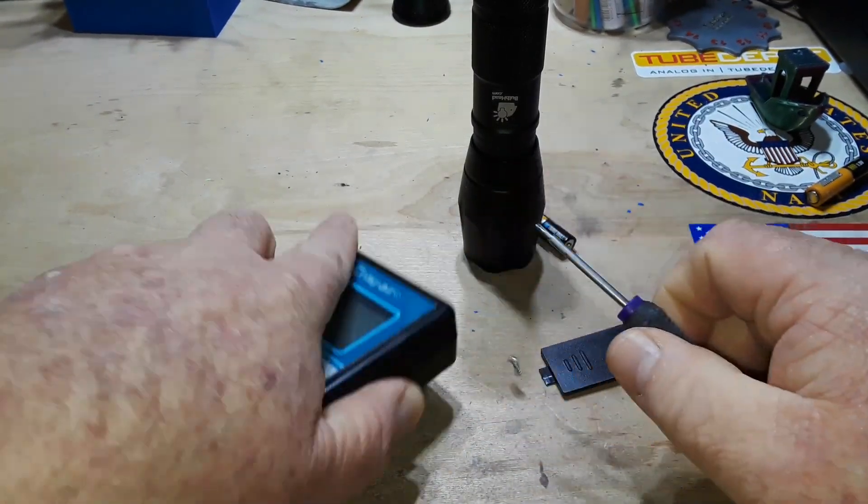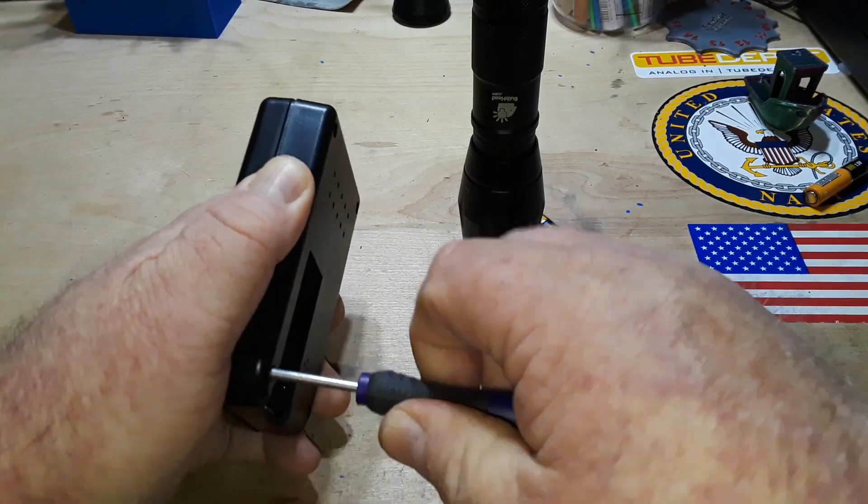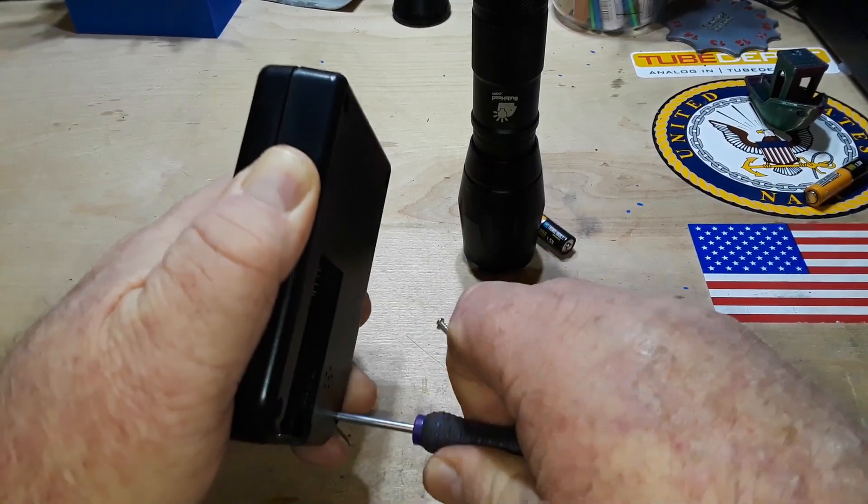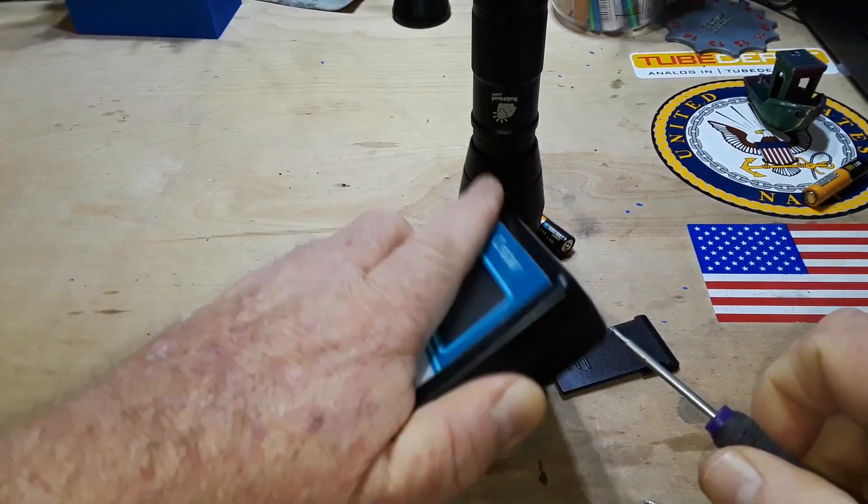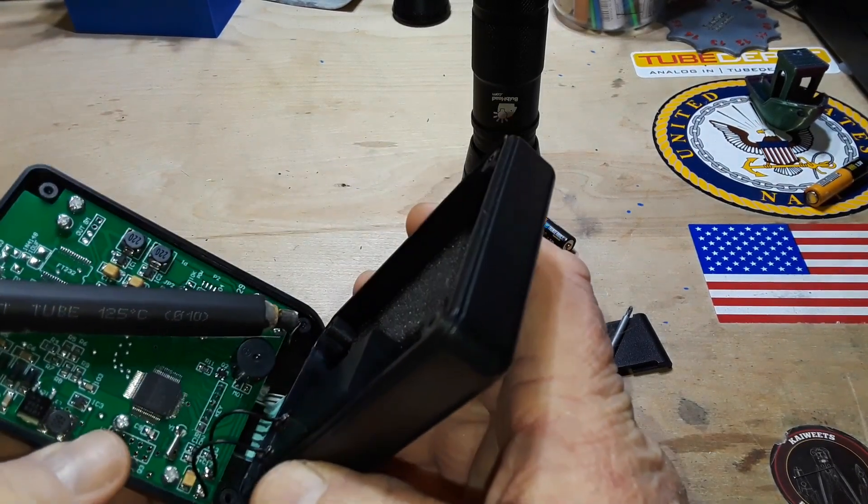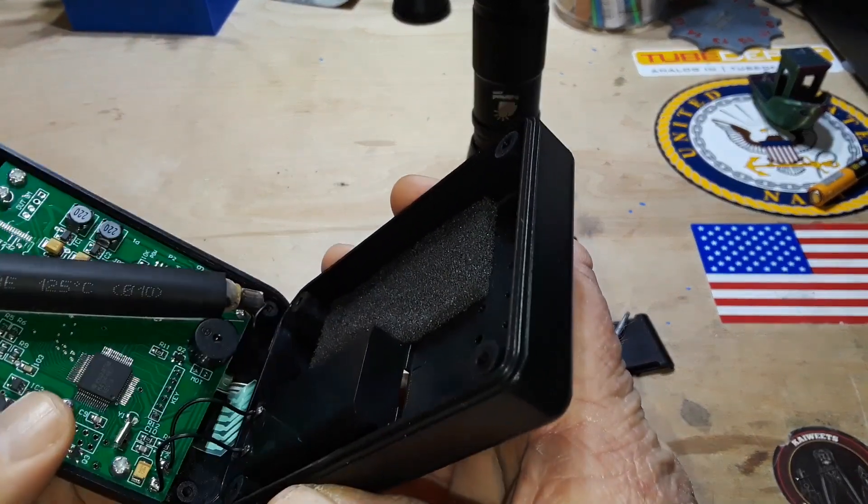So, the heart of this, and where it gets its name, is the tube, also known as a Geiger-Müller tube, named after the two people that invented it. And there is our GM tube right there.